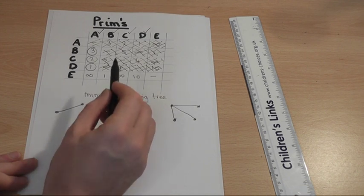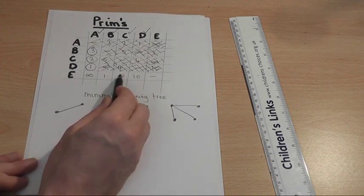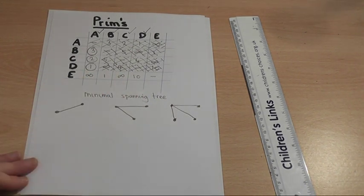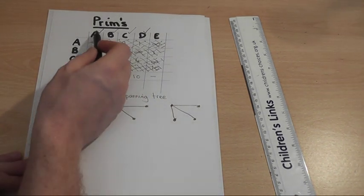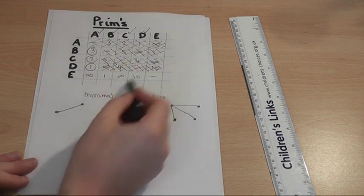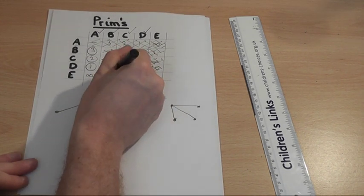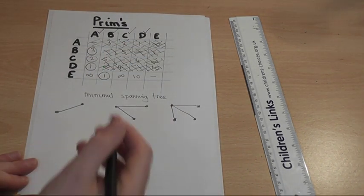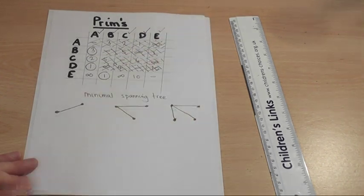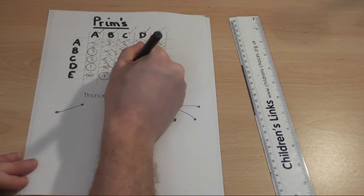And now look down A, B, D, and C. Worth pointing out now, I didn't mention before, the infinities represent no connection. But down these four columns, the one is the next lowest. So E is now in the network. I therefore cross off E.